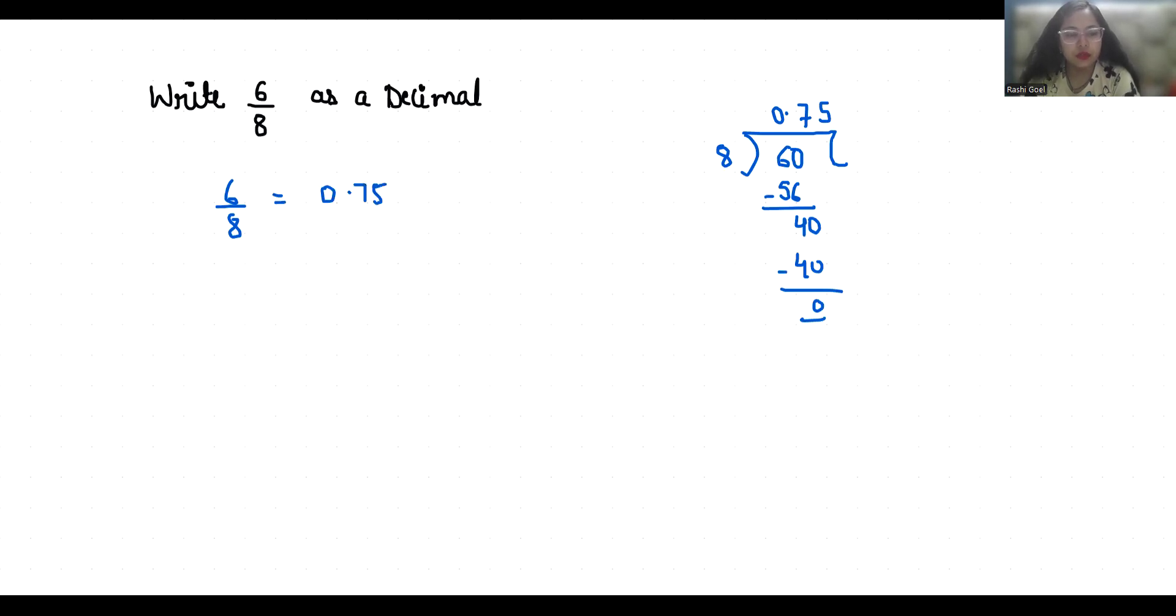Now method 2. We can reduce the fraction if possible. So I am going to divide both numerator and denominator by 2. It gives us 3 by 4.